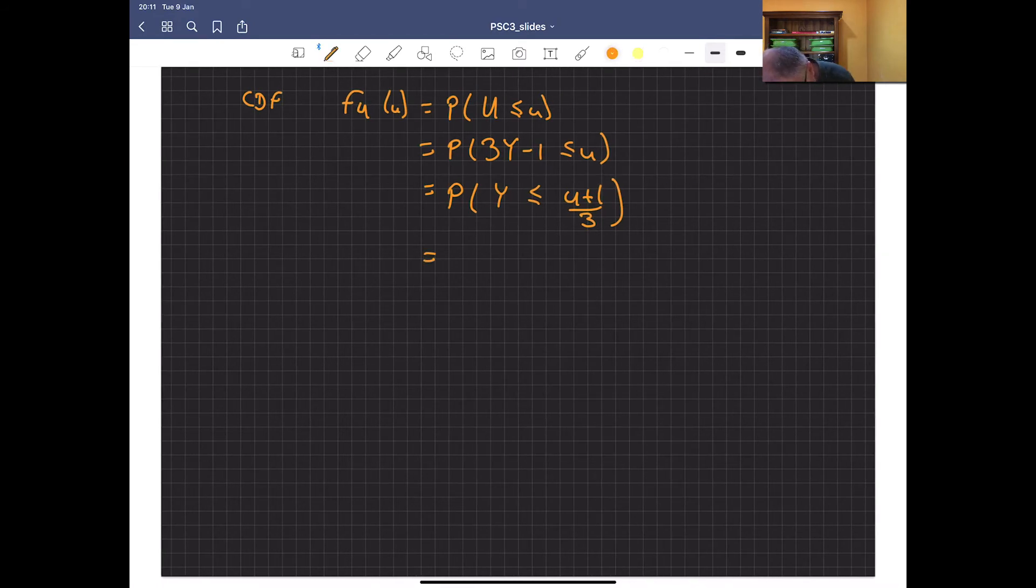Well, that's easy enough. We can integrate from minus infinity to U plus 1 over 3 f of Y dY, which in our case is just going to be the integral from 0 to U plus 1 over 3, 2Y dY.